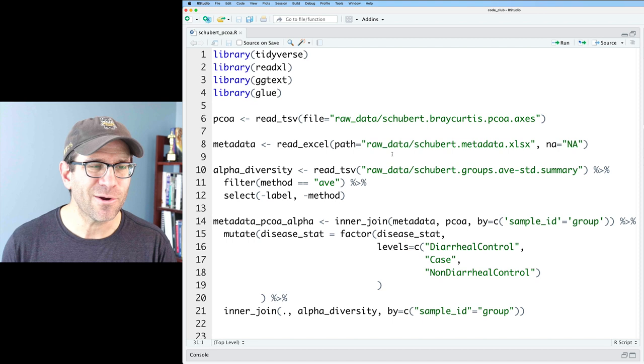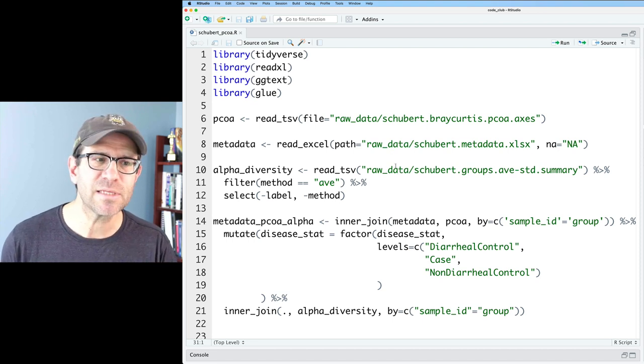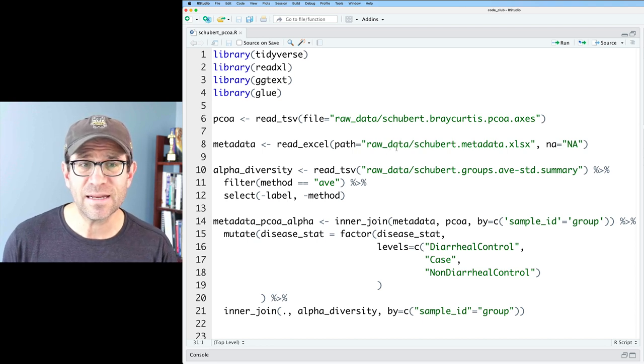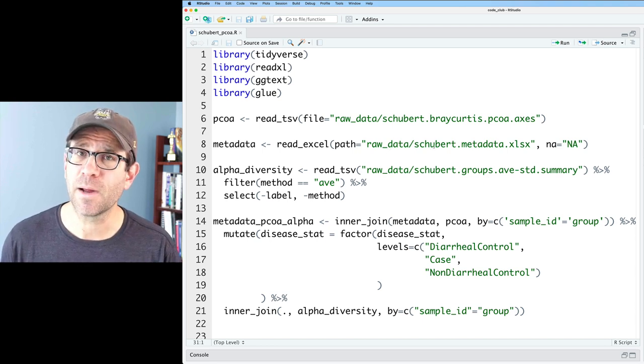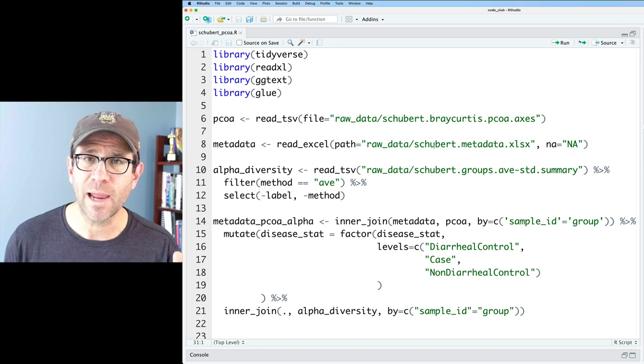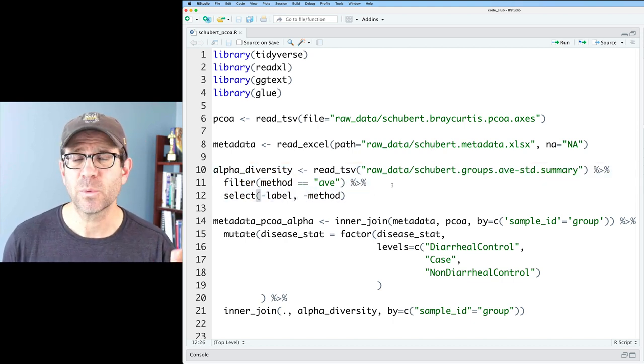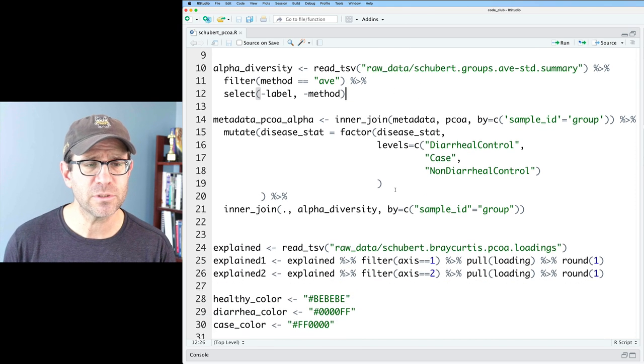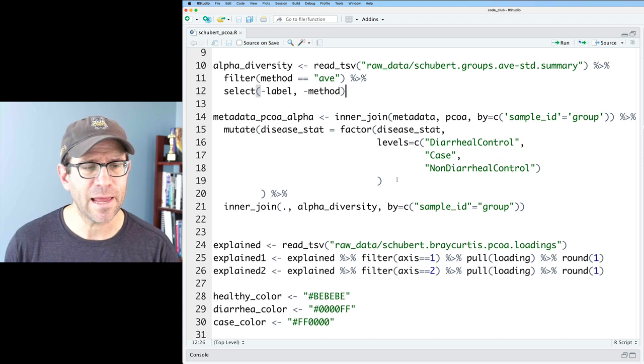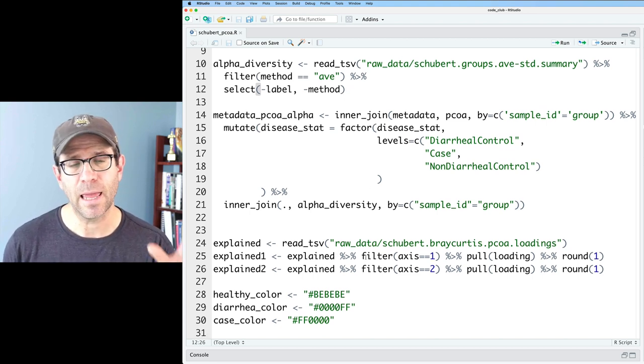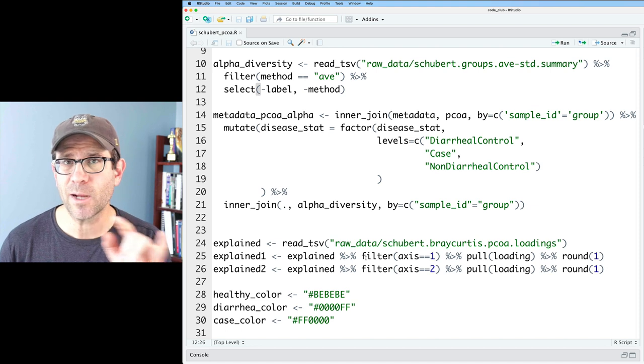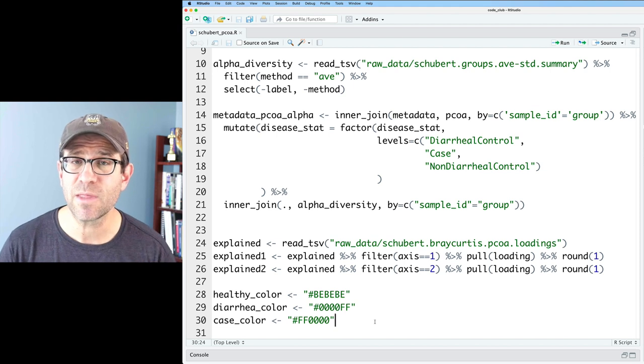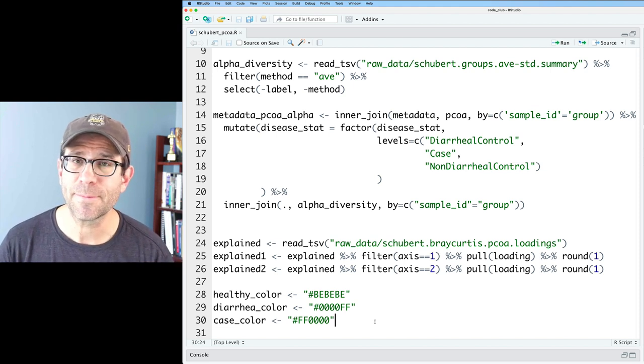To review what we've got going on here is similar to previous episodes. We're reading in the principal coordinate analysis data. We've got the metadata from this data set from a paper published in my lab a number of years ago by Alex Schubert. We've got the alpha diversity data so we can look at things like inverse Simpson index or Shannon diversity. We join that all together here. And I also have the information on how much variation is explained by the first and second axes.